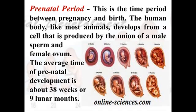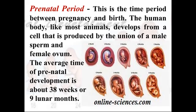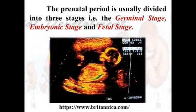The prenatal period is the time between pregnancy and birth. The human body, like most animals, develops from a single cell — produced by the union of male sperm and female ovum. When they meet, a cell is formed, and from that cell the wonder of nature occurs. The average prenatal time is almost 38 weeks — it can be 39 or 40 weeks — which is approximately 9 lunar months. This period is divided into three stages: the germinal stage, the embryonic stage, and the fetal stage.